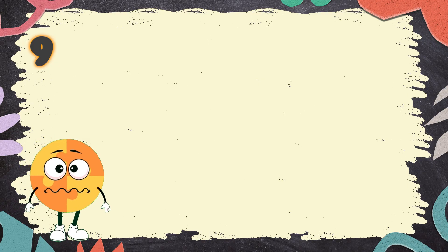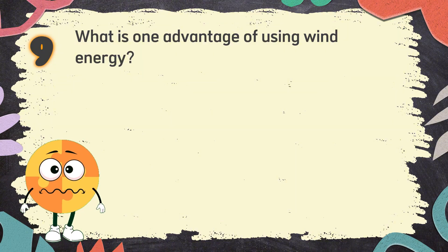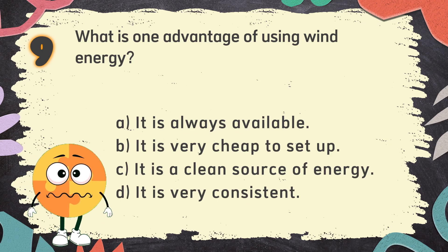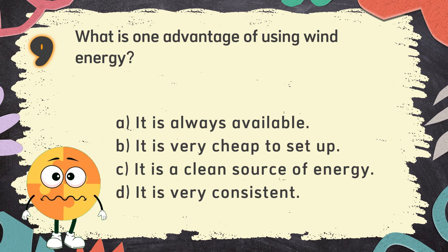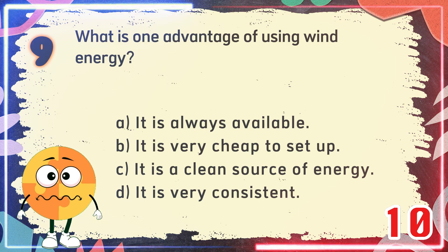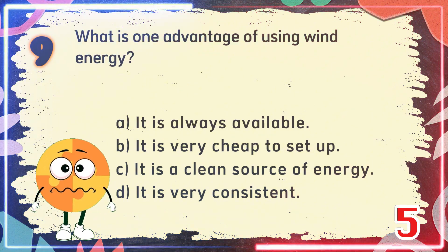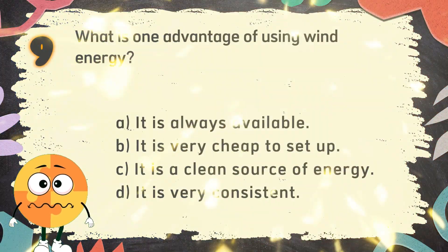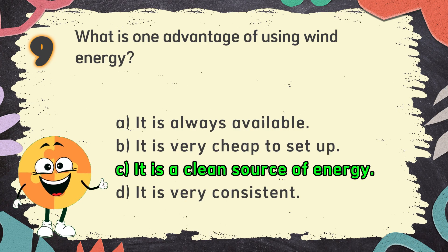Number 9: What is one advantage of using wind energy? The choices are: A. It is always available, B. It is very cheap to set up, C. It is a clean source of energy, D. It is very consistent. The correct answer is C. It is a clean source of energy.